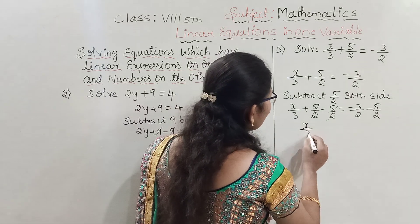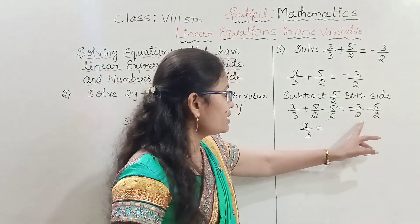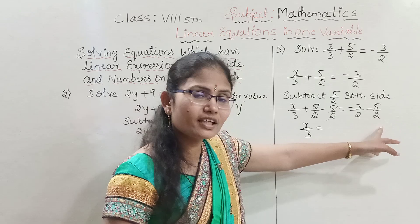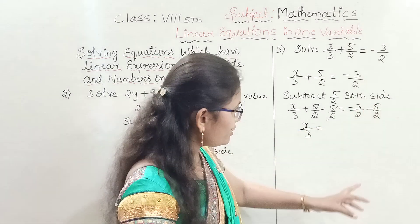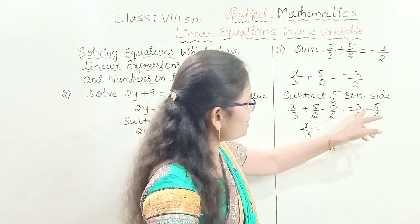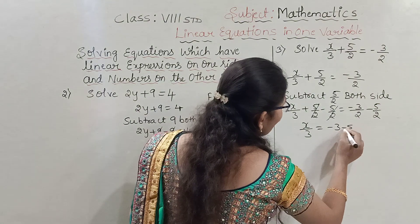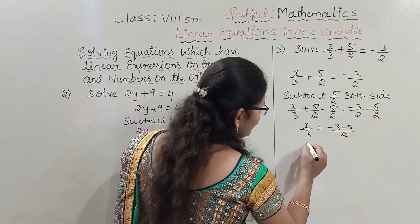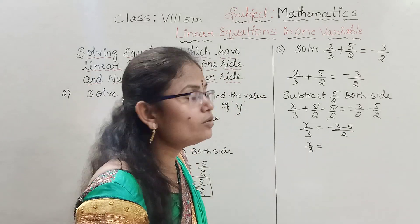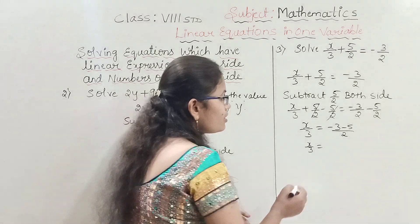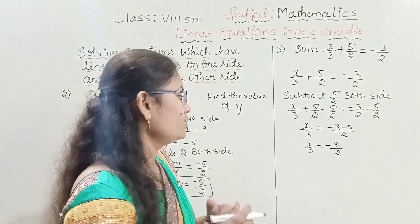So x by 3 equals minus 3 by 2 minus 5 by 2. The denominators are equal, so we operate directly on the numerators. Minus 3 and minus 5 — when both are negative we add, giving minus 8. So x by 3 equals minus 8 by 2.